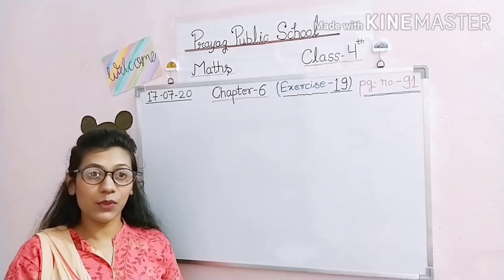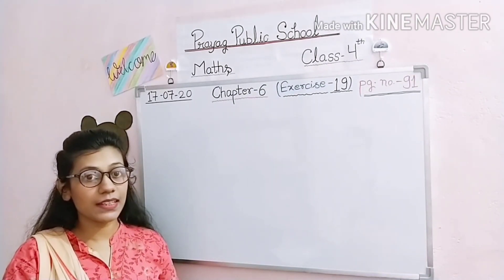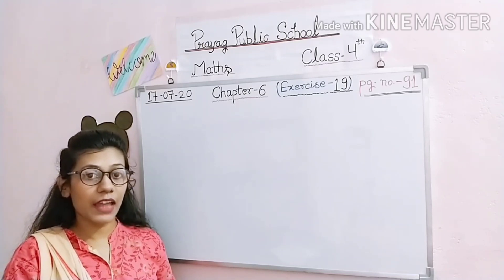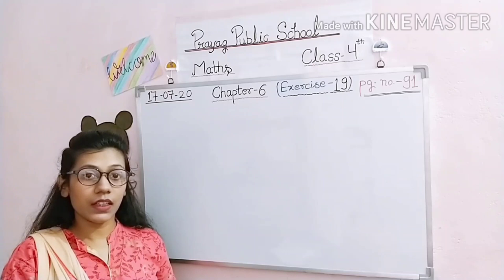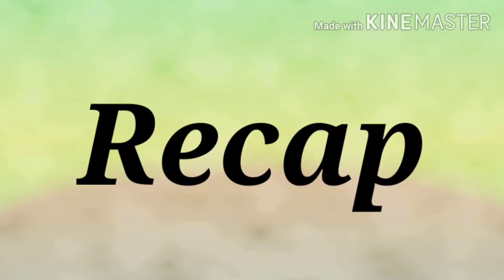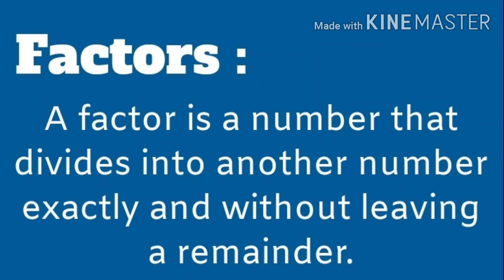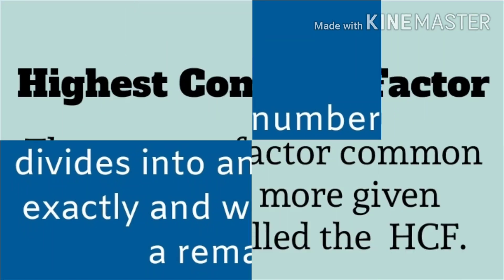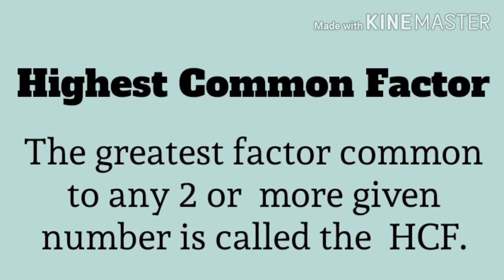Good morning, students of class 4. As you all know, we are in chapter number 6 — Factors and Multiples. Before starting today's class, let's recap what we learned in the previous class. A factor is a number that divides into another number exactly and without leaving a remainder.